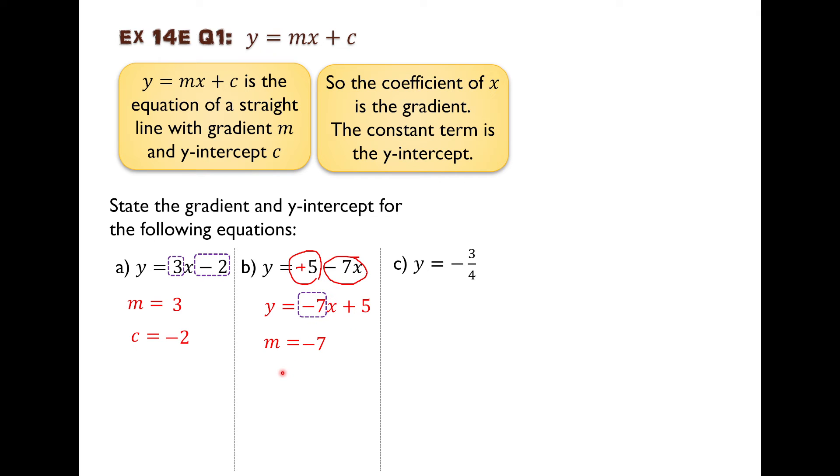And c is the constant term. It's the term that's by itself, so the term that does not contain an x. I've got a term there and another term there. Which term does not contain the x? This one. So c, the y-intercept, is positive 5.